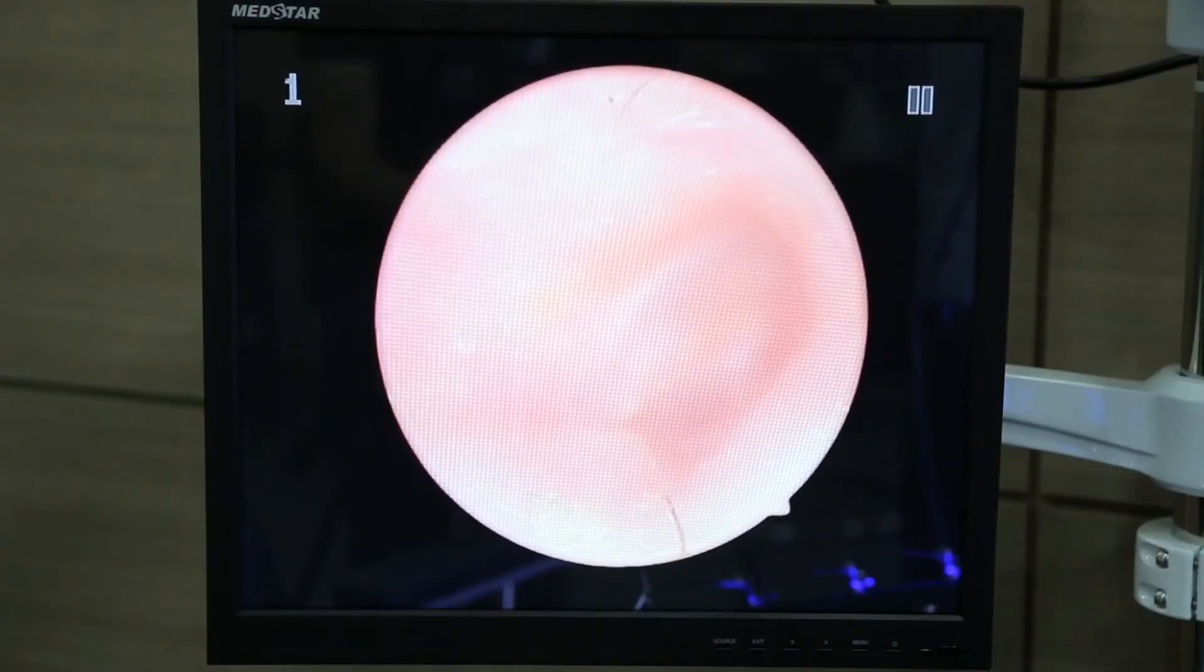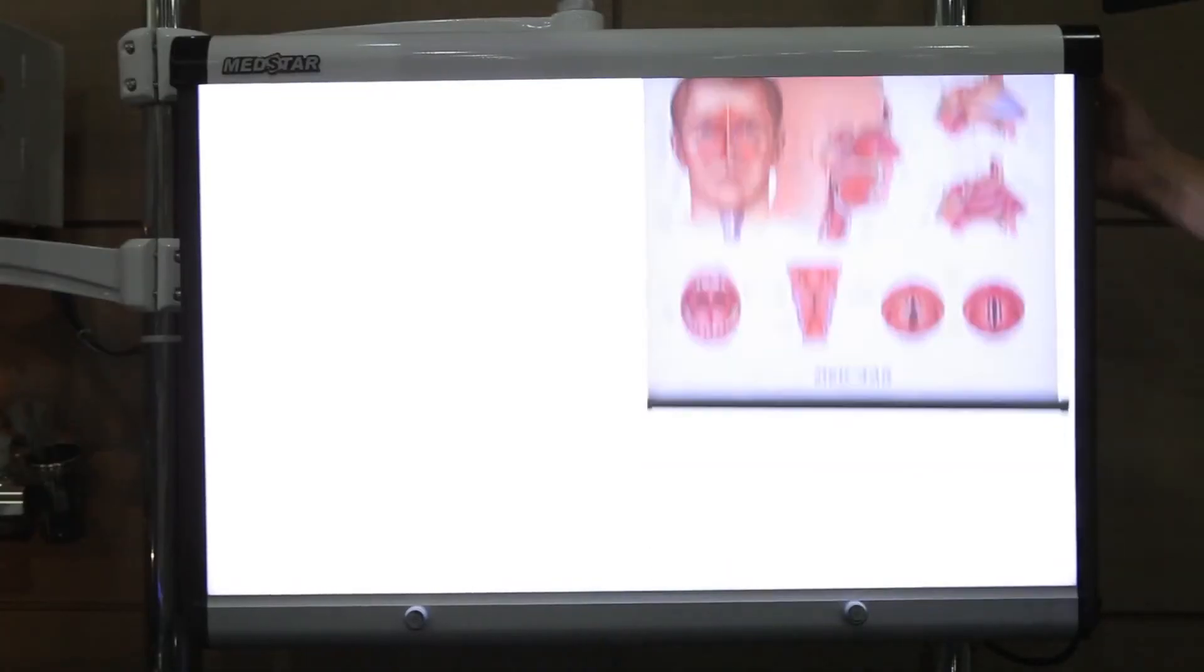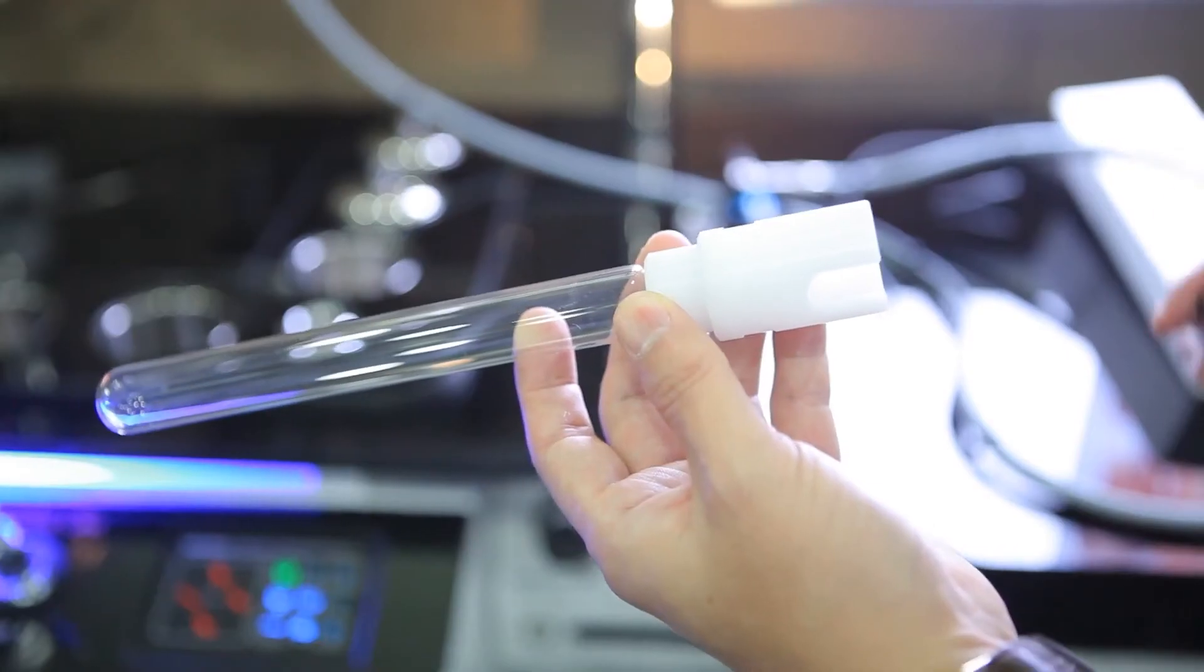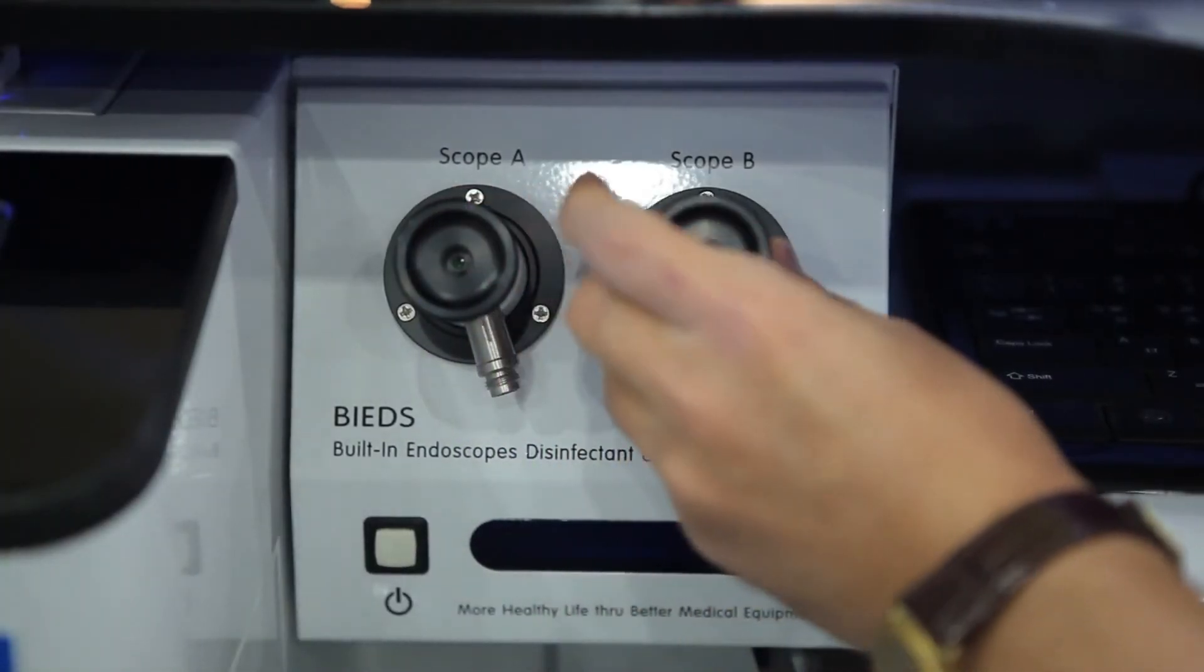It comes with a high definition endoscopic display, a clear microscopic display, and an impressively clean view box. It also comes with a built-in endoscope holder, UV sterilizer, and can be PC installed.